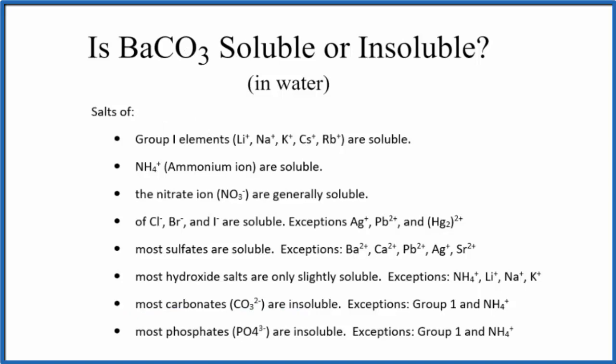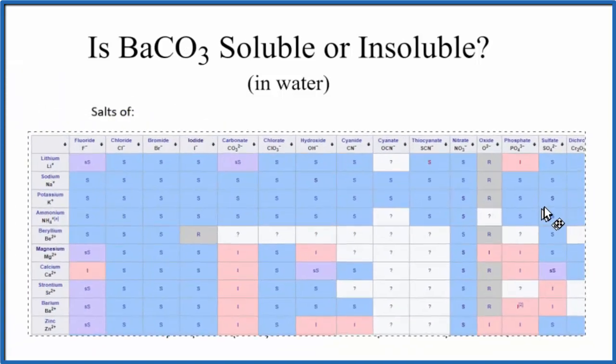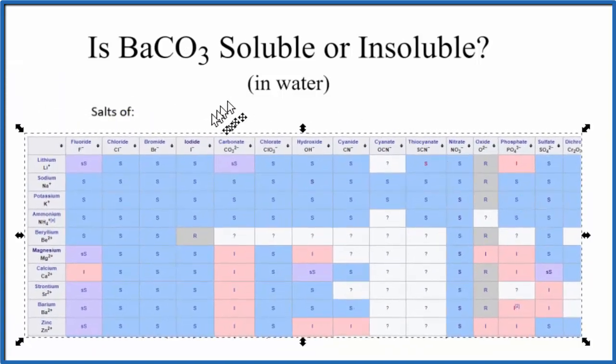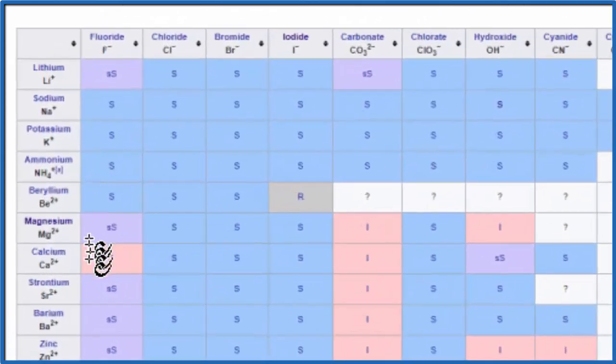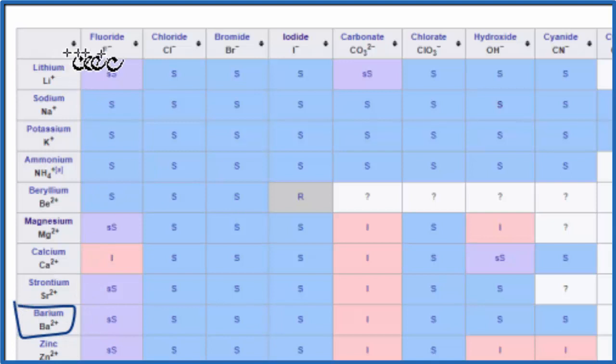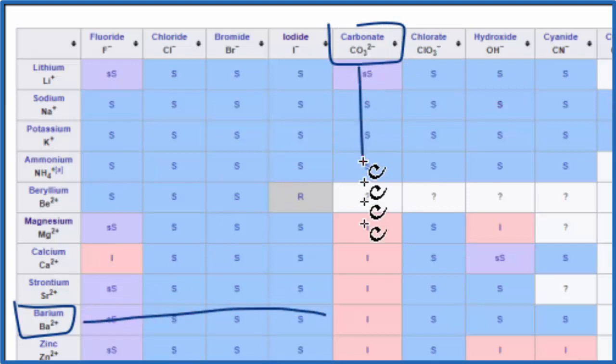There's another way we could do this. We could look at a solubility chart. So here's a solubility chart. We go down, and right here is barium, Ba²⁺, across, here's the carbonate. So we have our CO3²⁻ ion, we go over, and then we go down, and right there where they meet, that I, that means that barium carbonate is going to be insoluble in water.